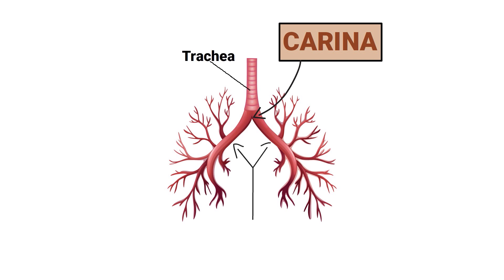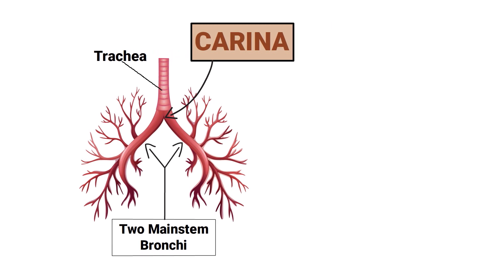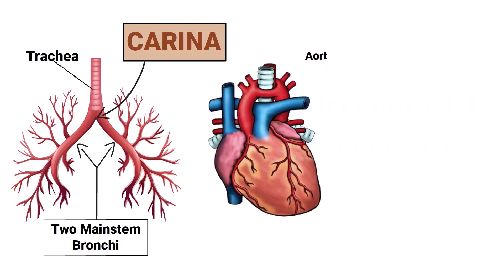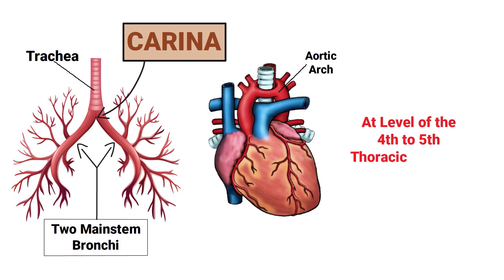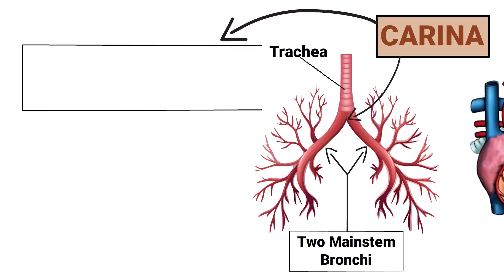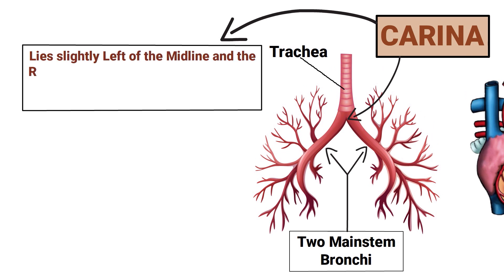Anatomically speaking, the carina is normally at the base of the aortic arch, which should be at the level of the fourth to fifth thoracic vertebrae. The carina lies slightly left of the midline.